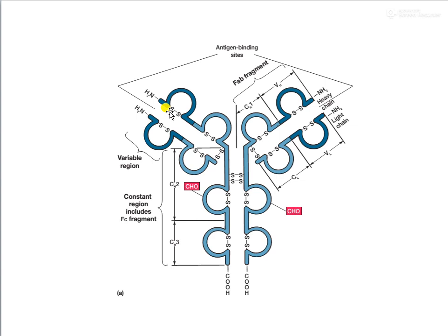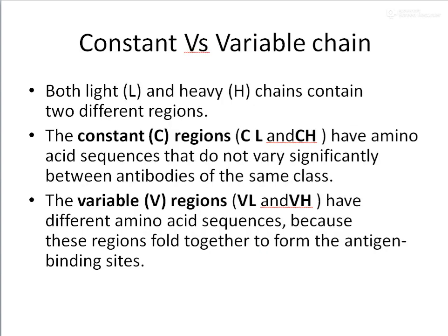If you consider an antibody interacting with an antigen, it is the variable region which will interact with the antigen. Changes in this variable region enable the antibody to bind with different antigens. The constant region refers to the amino acid sequences that do not vary significantly between antibodies of the same class. When constant regions are in the light chain, they are called CL regions; in the heavy chain, they are called the CH region. We also have variable regions called VL and VH, and it is the variable region that forms the antigen-binding sites of the antibodies.